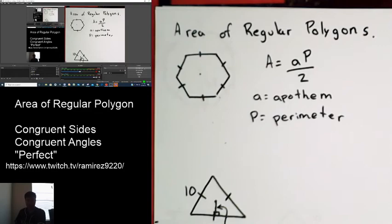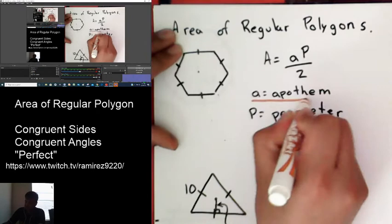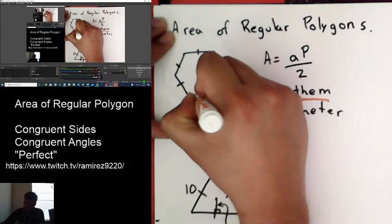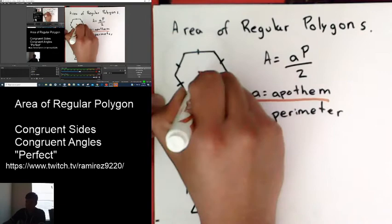Apothem is the one that you might not know. You might have not heard of before. So apothem here, I'm about to draw it here in the picture. Your apothem is from the center of the figure, perpendicular to a side, any side. And that's your apothem.